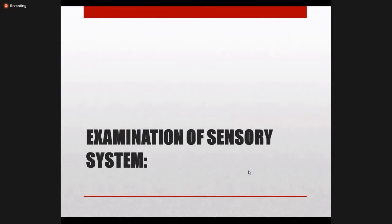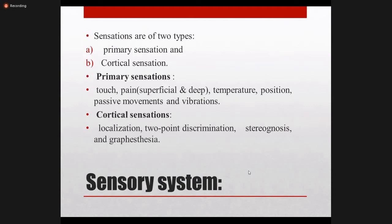After meningeal irritation signs, we move to examination of the sensory nervous system. This is a difficult system because it requires full cooperation and consciousness from the patient — if the patient is unconscious or uncooperative, it is very difficult to perform. Sensory sensations are of two types: primary sensations — including touch, superficial and deep pain, temperature, position, passive movements, and vibration — and cortical sensations.